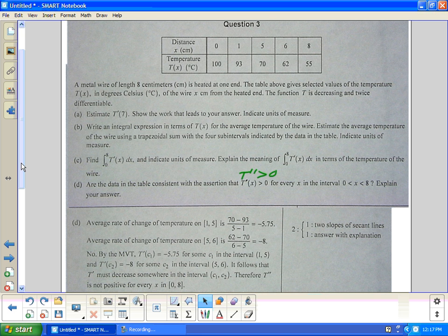Listen, you have to do some average rates of return. And what they did here is they did from 1 to 5, and they found that was negative. They did the average rate of return from 5 to 6, they found that was negative. And remember in letter A what did we know? That the average rate of change is negative also. So they're going to give a point for two slopes of secant lines. And then they're going to have this explanation. Are the data tables consistent with the assertion that T'' is always greater than zero? Or that it's concave up everywhere. And the answer here is no. By mean value theorem, T'(c₁) equals -5.75 for some c₁ in the interval 1 to 5.